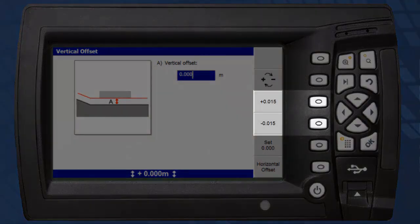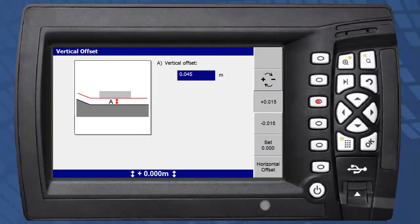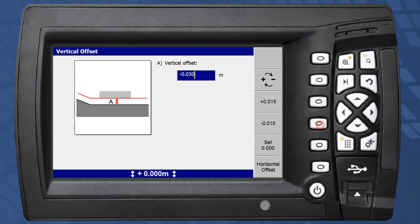There are two soft keys that will incrementally increase or decrease the vertical offset. Note the offset value associated with these keys can be customised. Alternatively, the arrow keys can be used to enter a specific value.